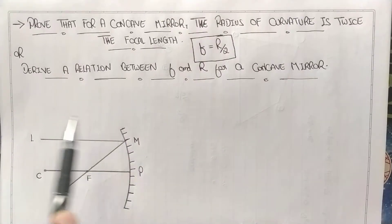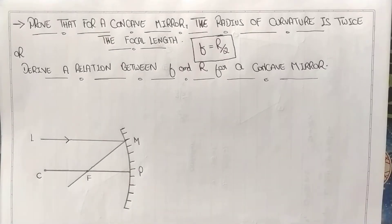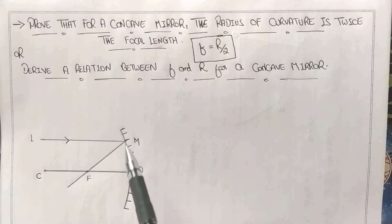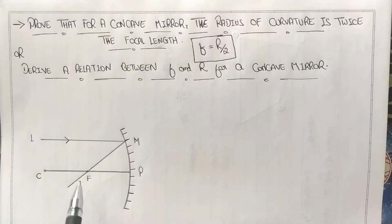As you see here, this is the diagram required for our derivation. Let me explain this diagram. The right side represents the given concave mirror, which is shaded on the other side so that the incident ray reflects back.